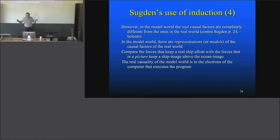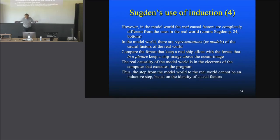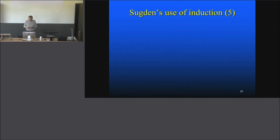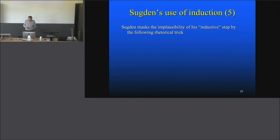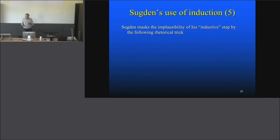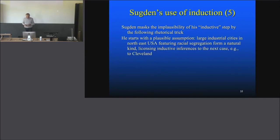You do not get this homogeneity that you need for a natural kind — that's an illusion, because the causality is utterly different. So the step from the model world to the real world cannot be an inductive step based on the identity of causal factors, because the causal factors are utterly different — incredibly different. There is something deeply wrong. It took me also some time to see that. When you read the paper — and as I said, the paper is wonderfully composed, he really knows what he's doing — if you read that inductive step, you say yes, it's much better than all the alternatives. But he's really tricking at one point: he masks the impossibility of his inductive step by the following rhetorical trick.